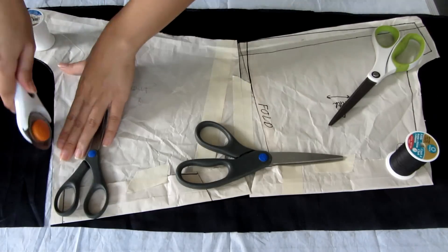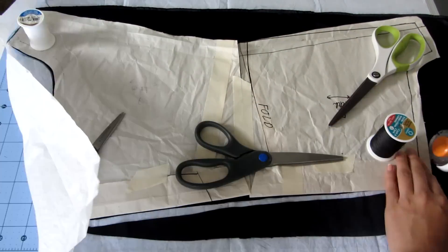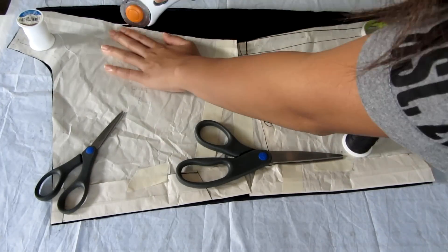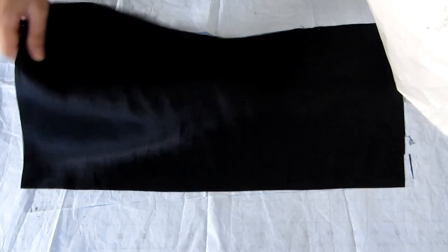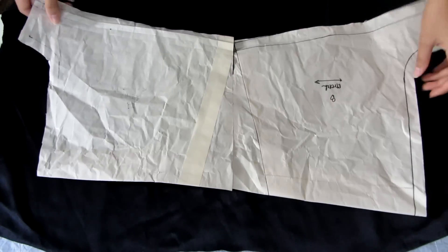When cutting the shorts pieces, make sure that the two pieces mirror each other. So I cut out the first piece and then I flip the pattern over and then cut out the second piece.